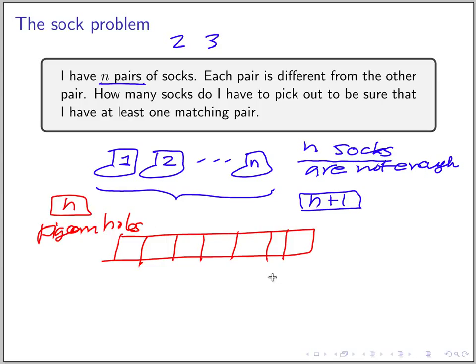And then you pick n plus 1 socks, so at least one sock must go to the same hole and that's where you get the same pair. So this is like the sock number up to the pair number, n to n.